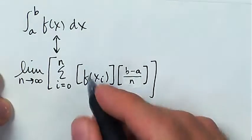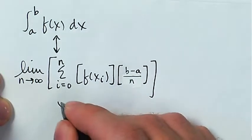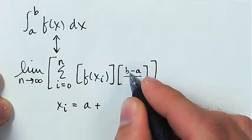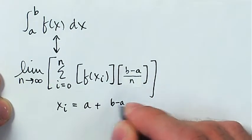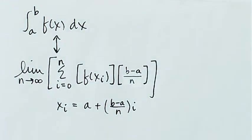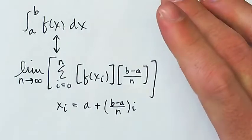And also it might be useful to know that x_i is in general going to start at a, and then add that (b - a) divided by n multiplied by i, where i is the index and not the square root of negative 1. Alright, so let's get after it.